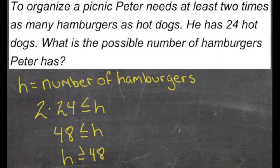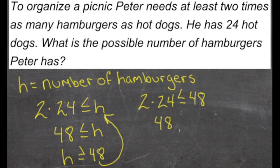Now we'll take our information and we'll check it. Since h has to be greater than or equal to 48, and we know that 2 times 24 has to be less than or equal to h, we can say 2 times 24 needs to be less than or equal to 48. By plugging this information back into our original equation. Since 2 times 24 is 48, and 48 is less than or equal to 48,